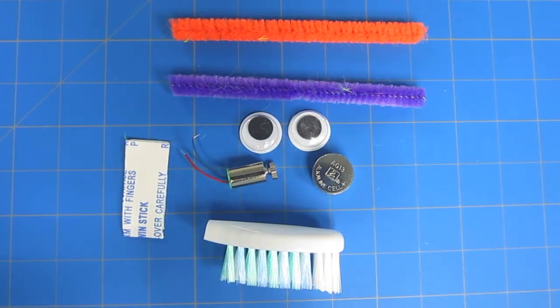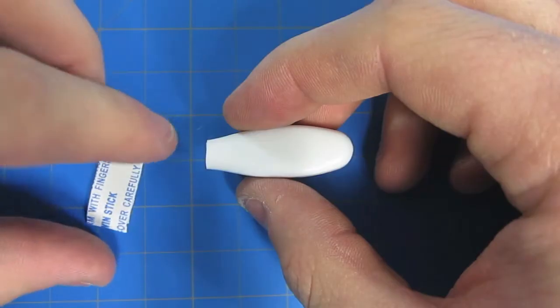You'll need the following parts: a toothbrush head, double-sided foam tape, a vibrating motor, a small coin cell battery, googly eyes, and pipe cleaners.